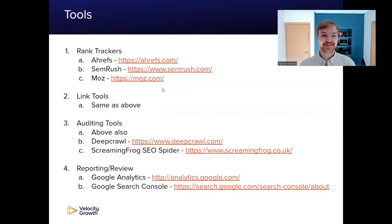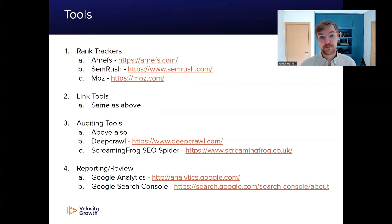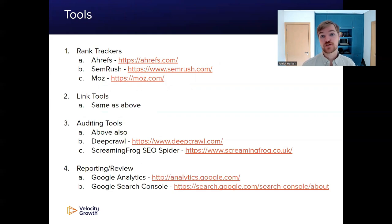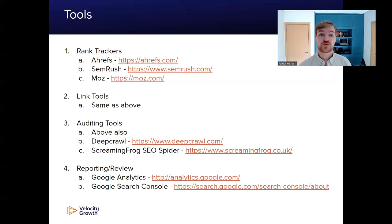So that's what's coming up. Moving into that, here are some tools I want to quickly discuss and give you an idea of what I think is prerequisite to go forward with this course. Four general types of tools: rank trackers, link tools, auditing tools, and reporting slash review tools. The beauty is that most of these things can be packaged into one. You can see here I've outlined rank trackers such as Ahrefs, SEMrush, and Moz. Those also have link and auditing tools bundled in, and for that reason I generally recommend you go ahead and look at purchasing one of those.